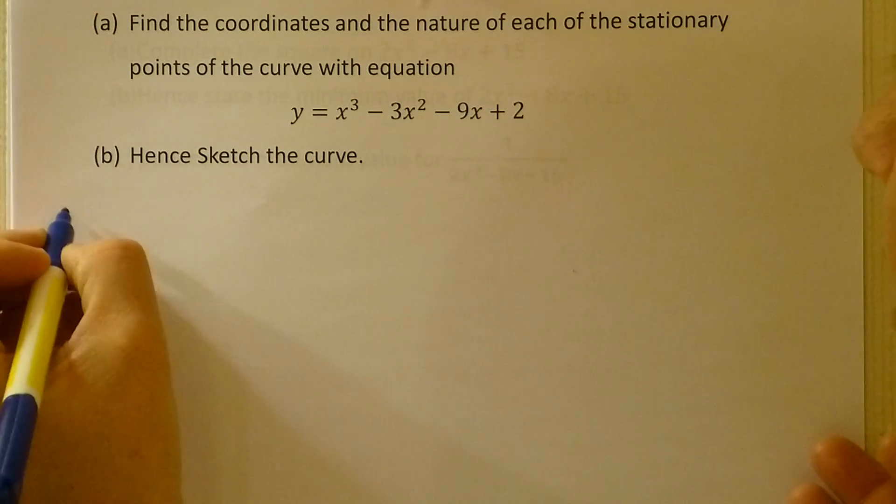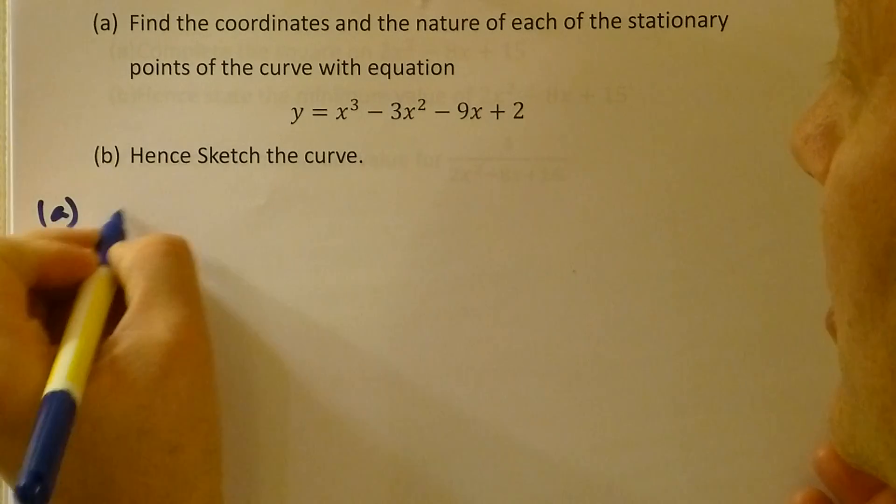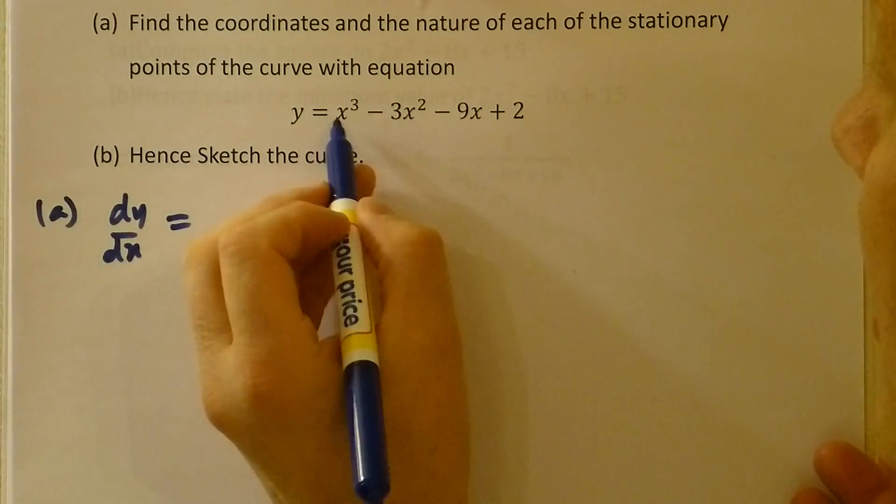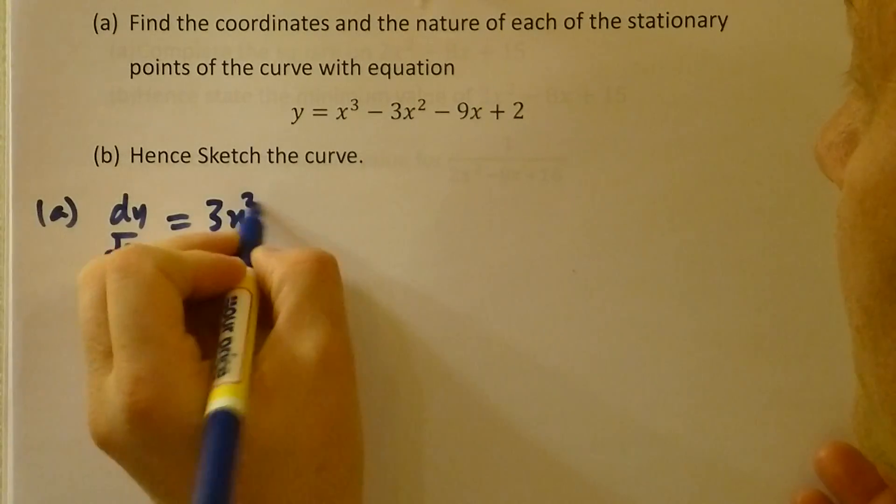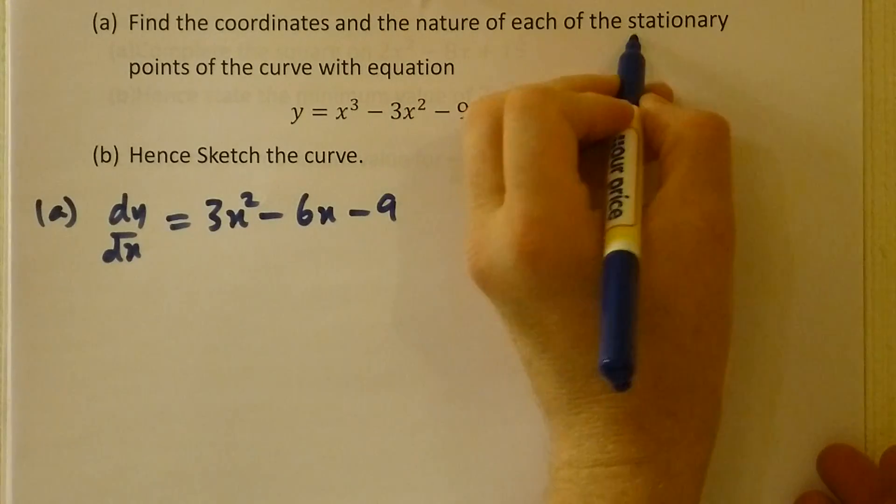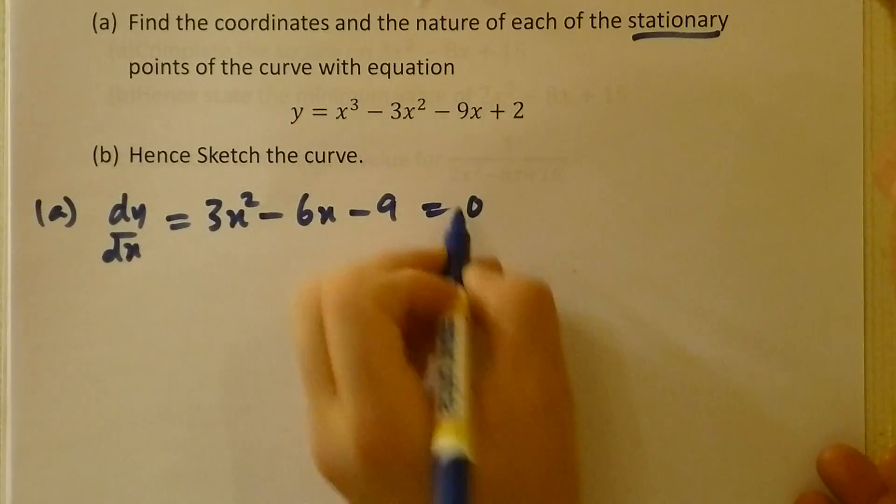To find stationary points, we require the knowledge of dy/dx. dy/dx will be 3x² - 6x - 9. To find the stationary points, we require that to equal 0.